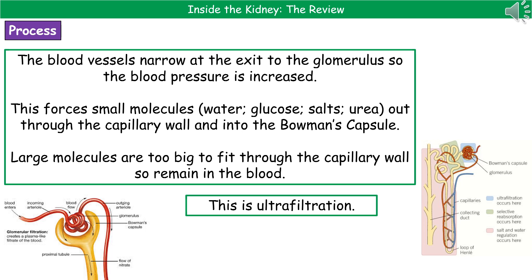To maintain high blood pressure, the blood vessels narrow at the exit to the glomerulus, which increases blood pressure. That high blood pressure within the glomerulus forces small molecules — like water, glucose, and urea — out of the capillary walls and into a structure called the Bowman's capsule, which is the yellow U-shaped structure in the bottom left. Large molecules such as red blood cells, white blood cells, and large proteins are too big to pass through the capillary wall, so they remain in the blood. This process of pushing some molecules into the Bowman's capsule but not others is called ultrafiltration.